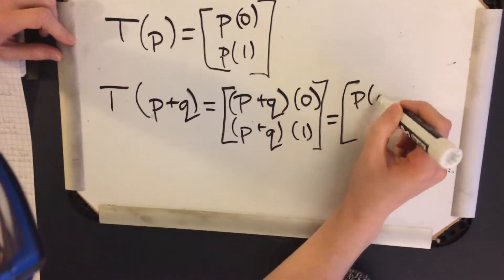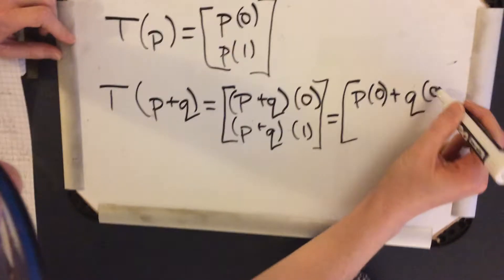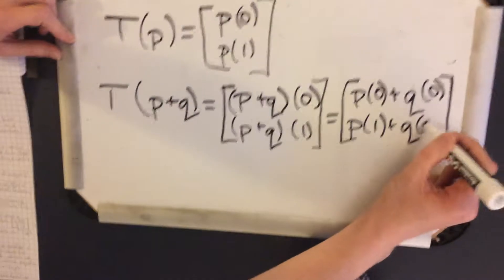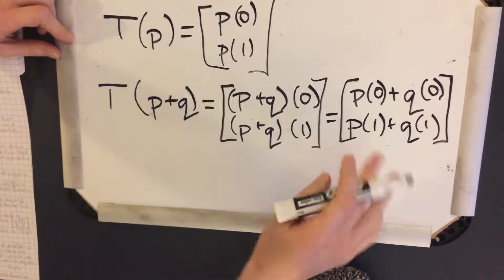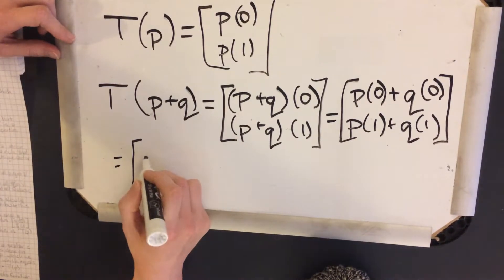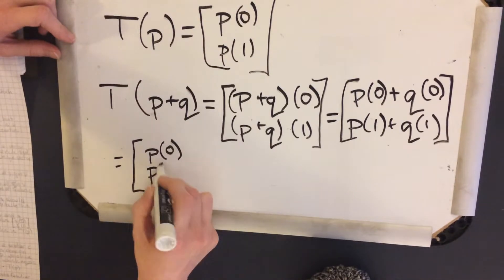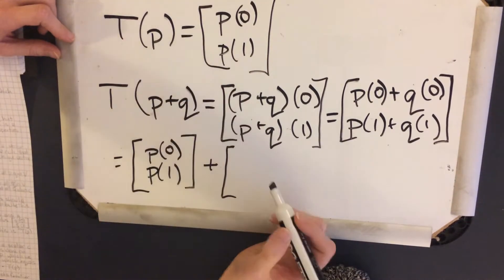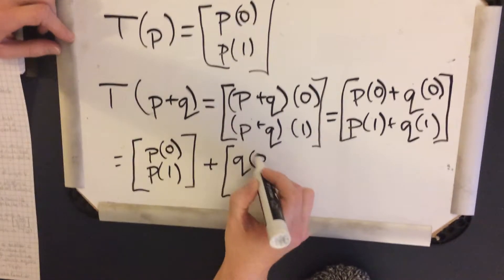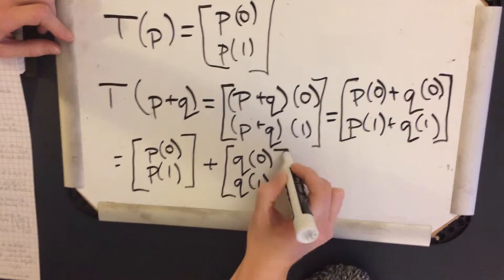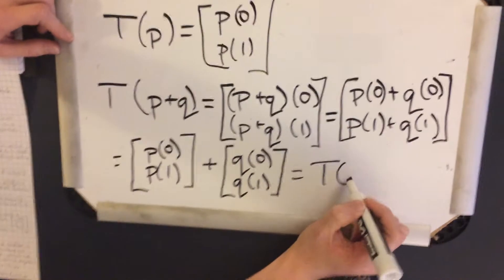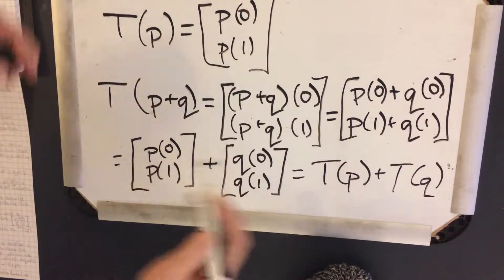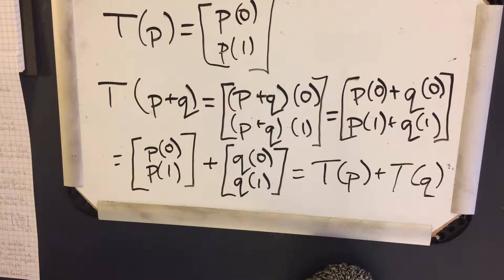So we have p(0), q(0), p(1) plus q(1). And we can actually break that even further up. And this should start looking familiar because this first one looks exactly like T(p). And we can presume that this one would be T(q). And that is the first part of the linear transformation properties we would expect.